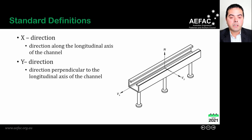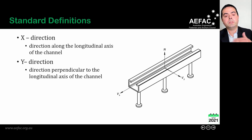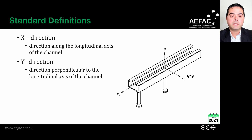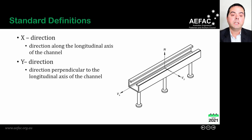For the 2021 edition of AS 5216, we define X and Y directions. There are three possible loading directions: tension (N), shear in the Y direction (Vy — perpendicular to the longitudinal axis of the anchor channel), and shear in the X direction (Vx — along the longitudinal axis of the anchor channel).